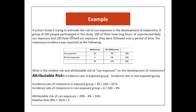Here is an example. A cohort study estimates the risk of sun exposure in the development of melanoma. 200 people participated: 100 had long hours of unprotected daily sun exposure, and 100 had limited sun exposure. They were followed over a period of time, and melanoma incidence was reported in a two-by-two table. The question is: what is the relative risk, absolute risk, and attributable risk of sun exposure in the development of melanoma?